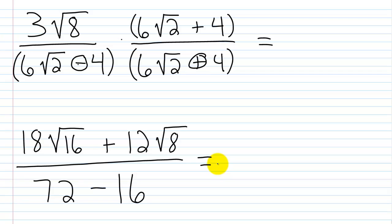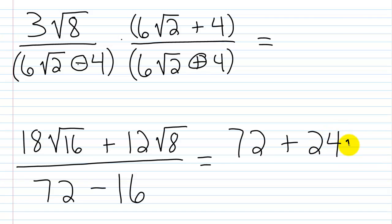To simplify in the numerator: the square root of 16 is 4, and 4 times 18 is 72. Then plus — I have 12 times the square root of 8. The square root of 8 is the square root of 4 times the square root of 2; the square root of 4 is 2, so 2 times 12 would be 24, and then times the square root of 2. This is over 72 minus 16, which is 56.